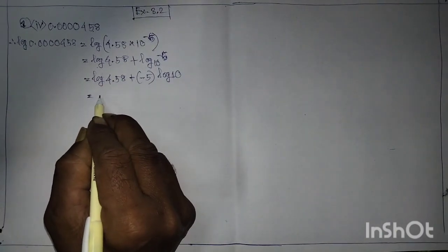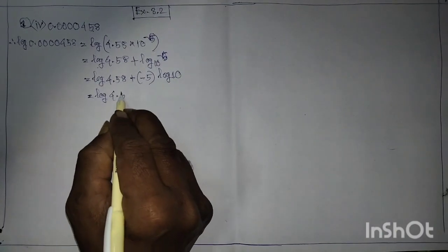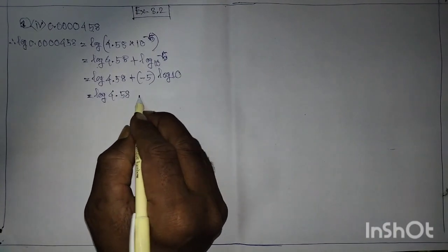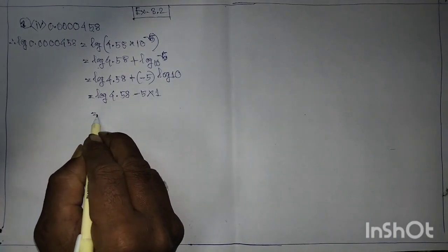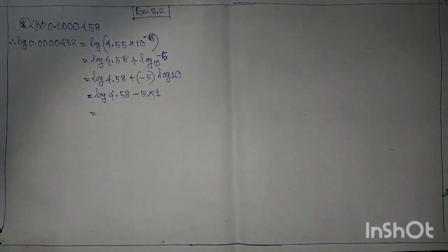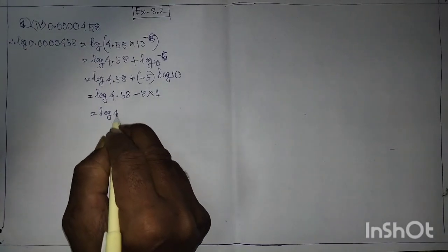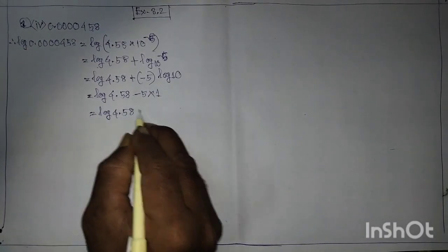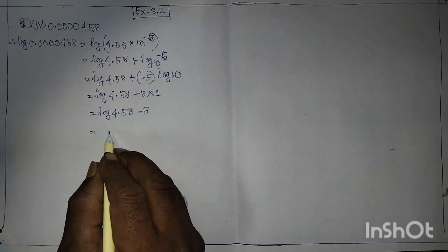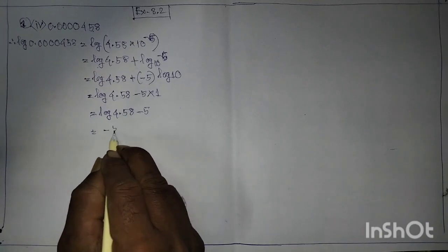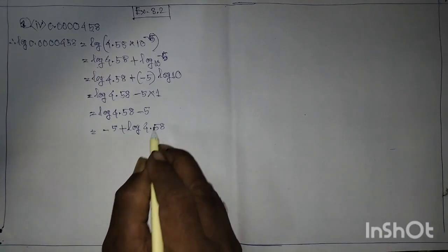In place: log 4.58 minus 5. Is 5. Log 4.58 minus 5. Is 5. Minus 5 plus log 4.58.